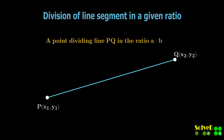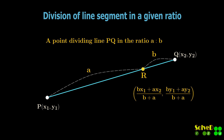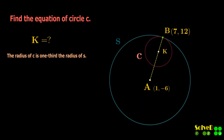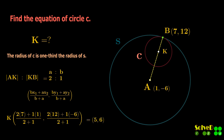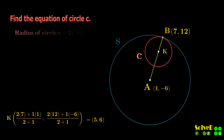The coordinates of a point dividing the line in the given ratio AB are given by this formula. Note that point K divides the line AB in ratio AK and KB. Since KB is one-third, therefore AK is two-thirds. Simplifying this, we get a ratio of two-to-one. Now use the coordinate formula for point K. Now that we have the center and the radius of circle C, the equation can be written in this form.